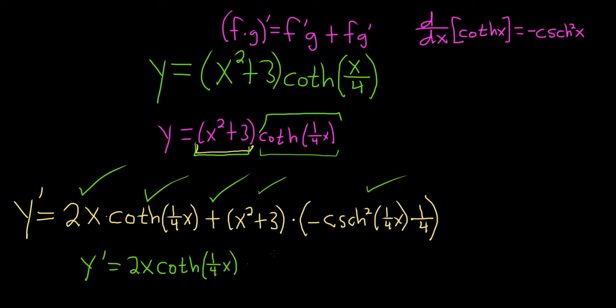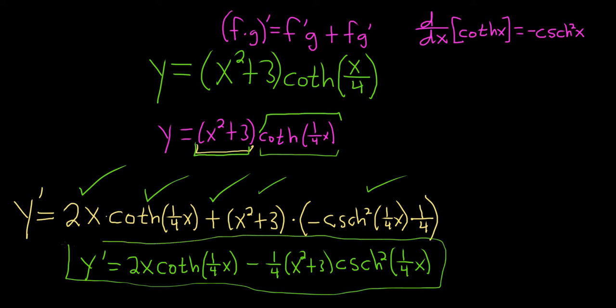And then minus 1 over 4. And then we still have this x squared plus 3. And let's just leave this hyperbolic cosecant piece back here. So hyperbolic cosecant squared of one-fourth x. And that would be the final answer to the problem.